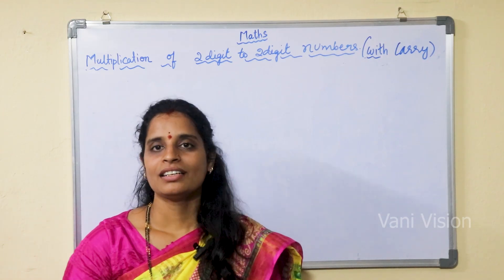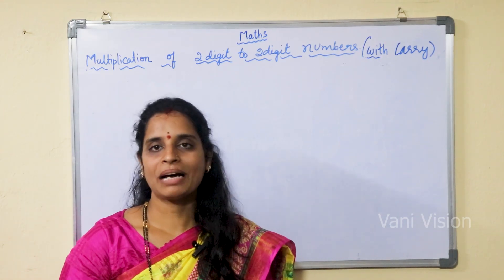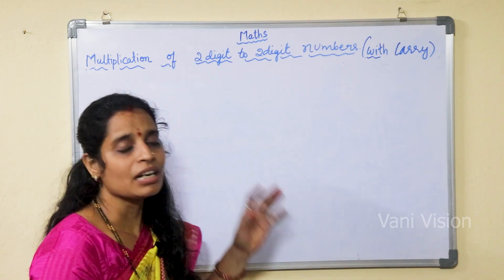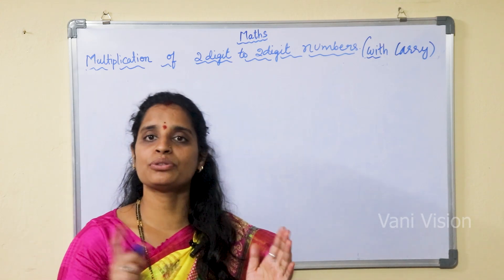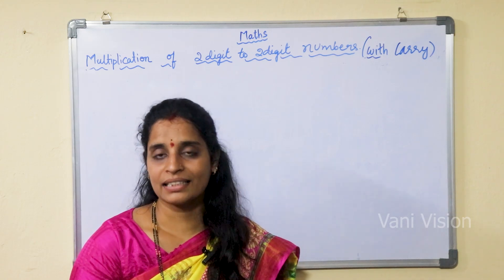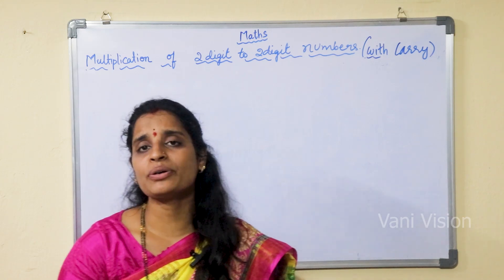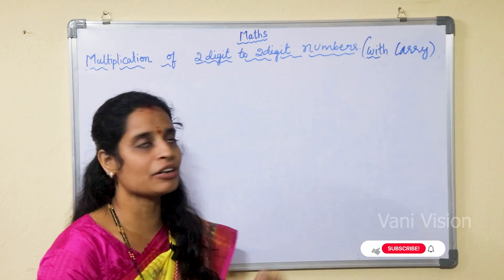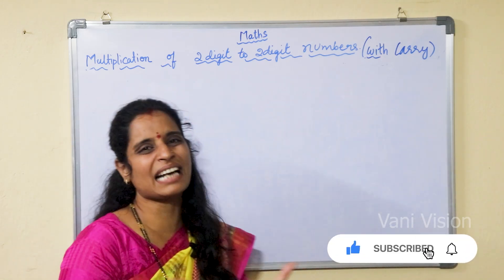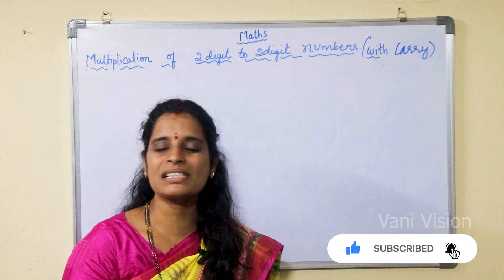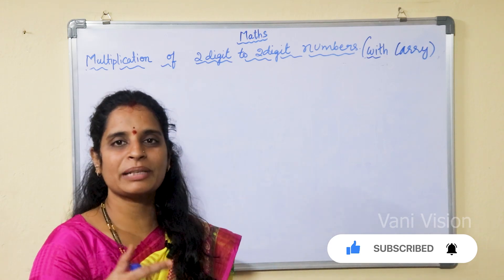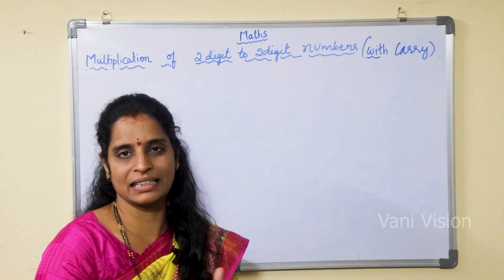Welcome back to Anivision. In my previous video we were discussing about multiplication of two digit to two digit numbers without carry. Today we are going to discuss about multiplication of two digit to two digit numbers with carry. With carry means we are going to take much bigger numbers, and we will be getting two digits while we are adding.